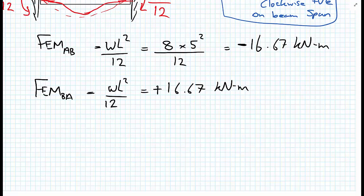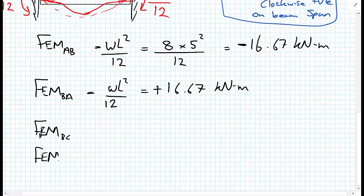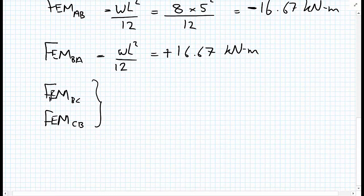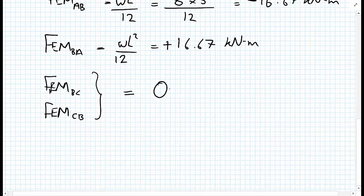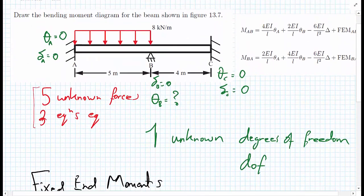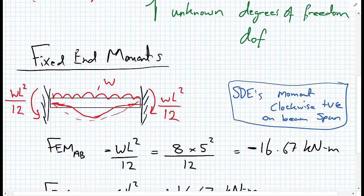We could also have fixed-end moments for span BC — at B pointing towards C, or at C pointing towards B. But since there is no applied load on span BC, there is no need for this correction factor, so both of these fixed-end moments are equal to zero. With the fixed-end moments calculated, we can now use our slope deflection equations to write down our moments in terms of the unknown displacements and the fixed-end moments.